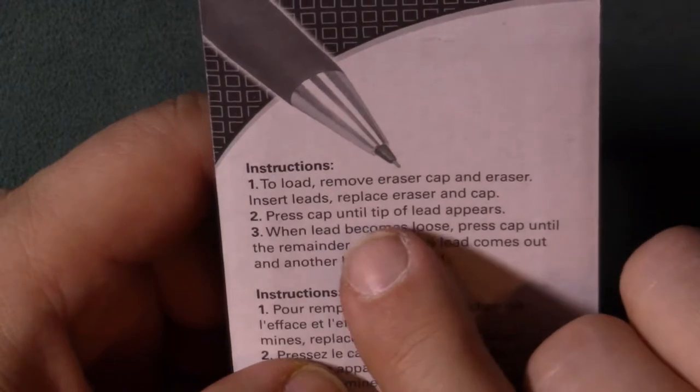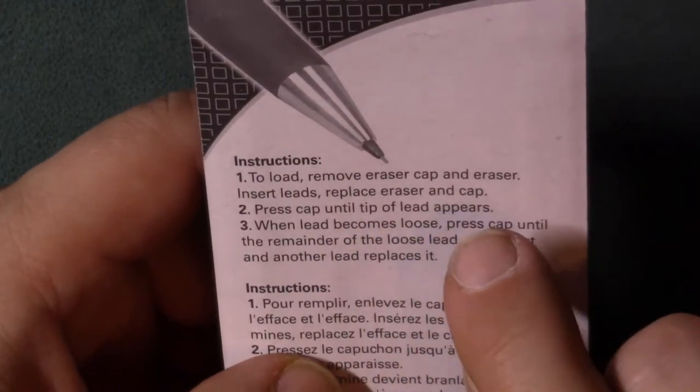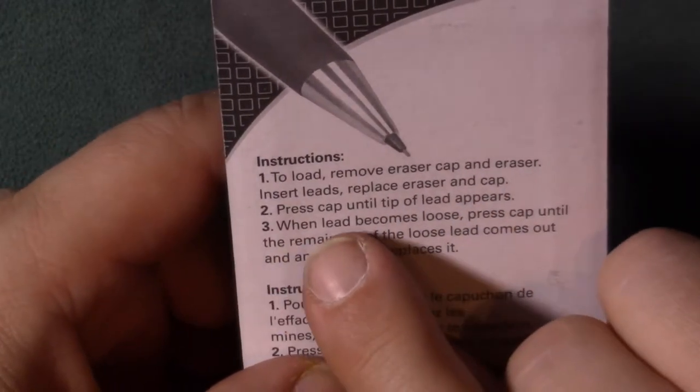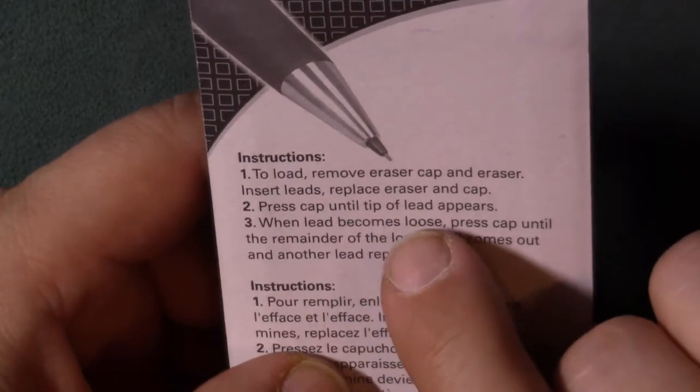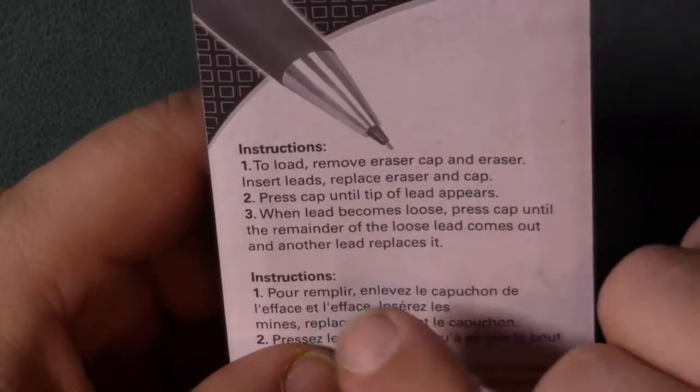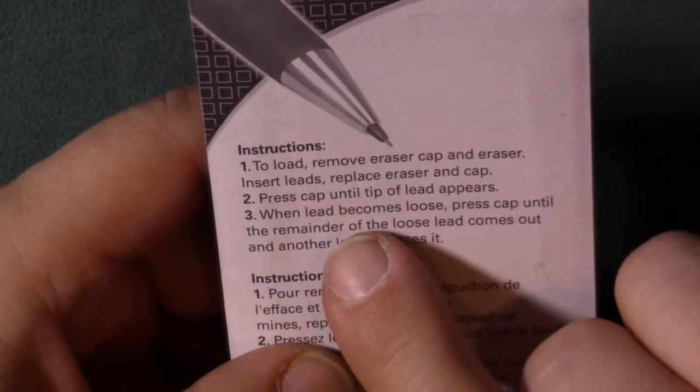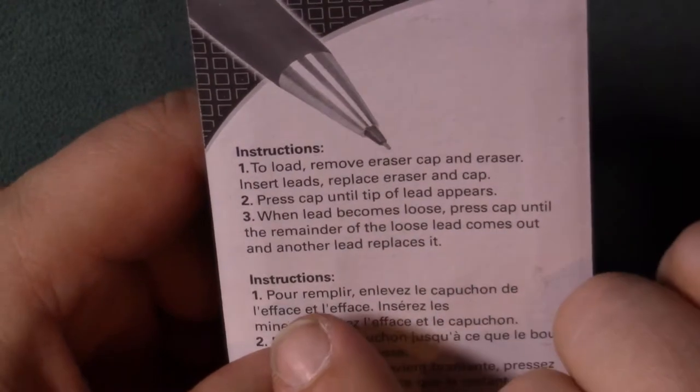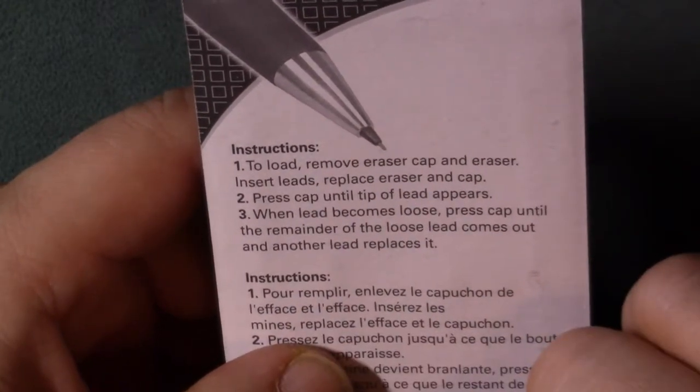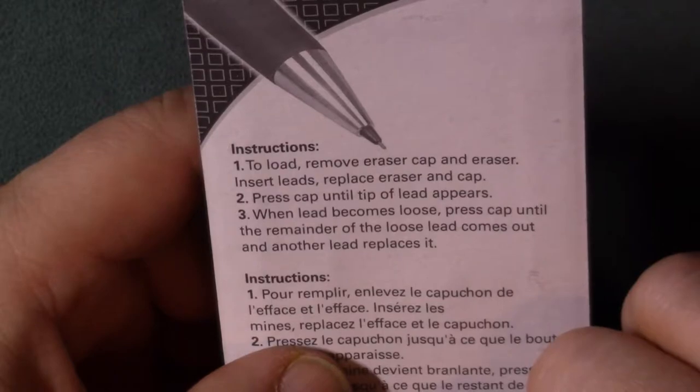Insert leads, replace the eraser and cap, press cap until tip of lead appears. When lead becomes loose, press cap until the remainder of the loose lead comes out and another layer replaces it.